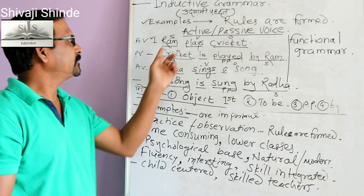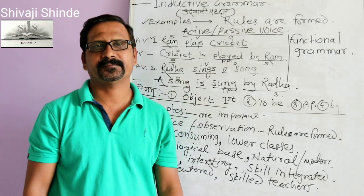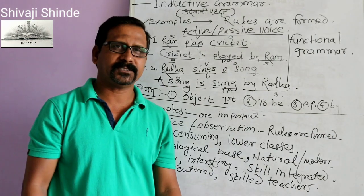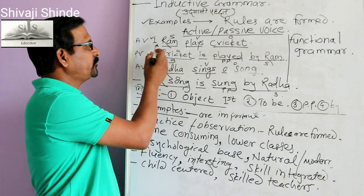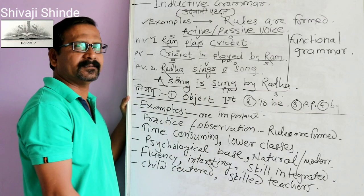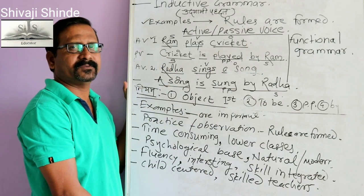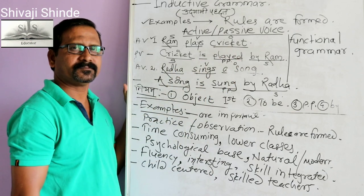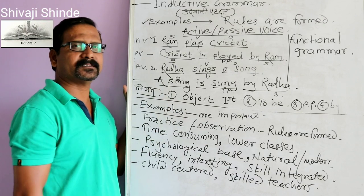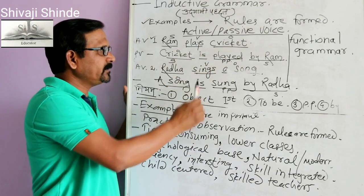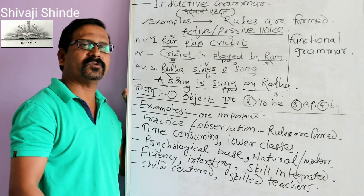Let's see how inductive grammar can be applied while teaching active to passive voice. I have two examples: 'Ram plays cricket' and 'Radha sings a song.' The teacher writes the question as well as the answer on the blackboard. So for the first example, 'Ram plays cricket' is in active voice, and the passive voice 'Cricket is played by Ram' is also given. Similarly, for 'Radha sings a song,' the passive voice is 'A song is sung by Radha.' In this way, the teacher writes many examples with their answers on the blackboard and asks students to observe very carefully.